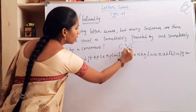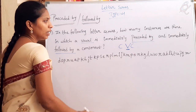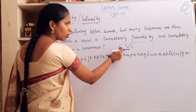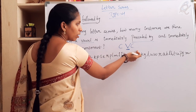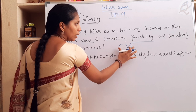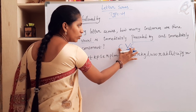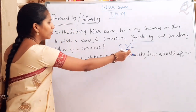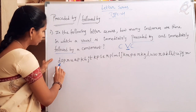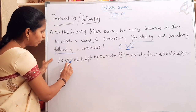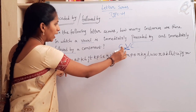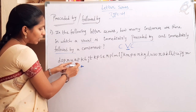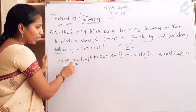First of all, check for the vowel. Next, observe the previous letter — is it a consonant or not? And the after letter — consonant or not? If a vowel is present in between two consonants, then count it. Check for a vowel: this is U. Before letter is a consonant, but after letter is not a consonant. So, don't take this one.